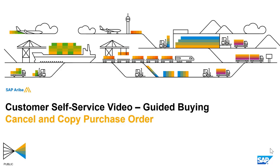Hello and welcome to another SAP Ariba customer self-service video. Today I will be discussing how users within Guided Buying are able to cancel purchase orders, send a message to the supplier, and copy the line items into a new requisition.